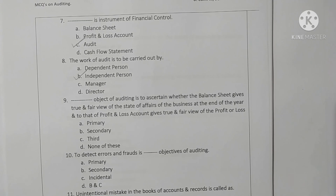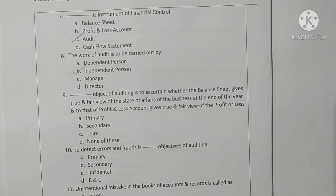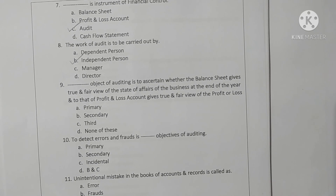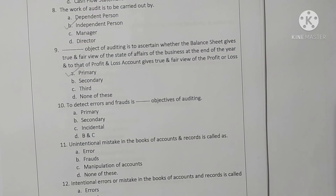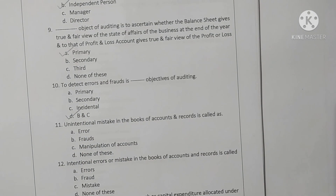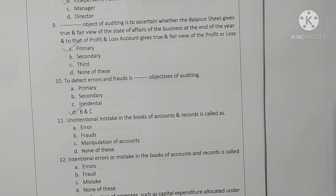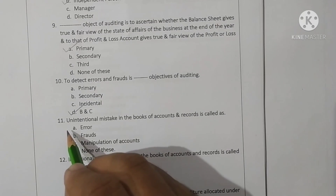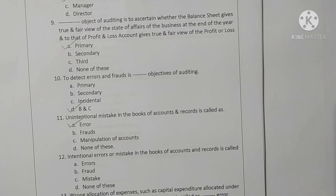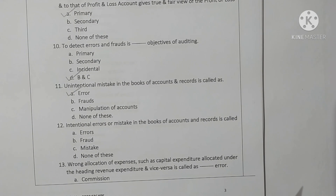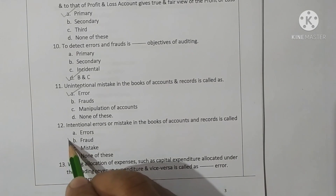The work of audit is to be carried out by an independent person — option B is correct. The primary object of auditing is to ascertain whether the balance sheet gives a true and fair view of the state of affairs of the business at the end of the year, and that the profit and loss account gives a true and fair view of the profit and loss — option A is correct. To detect errors and frauds is a secondary or incidental objective of auditing — option B is correct. An unintentional mistake in books of accounts and records is called an error — option A is correct. An intentional error or mistake in books of accounts and records is called a fraud — option B is correct.